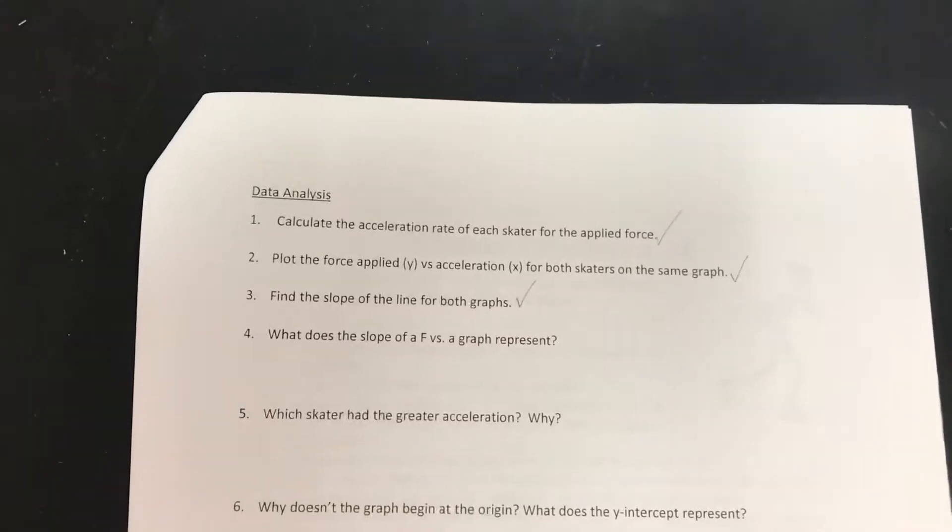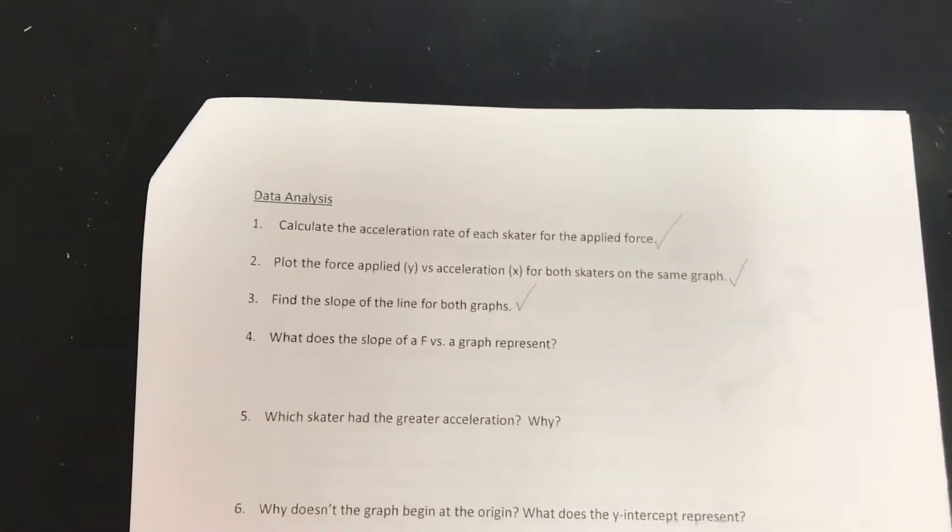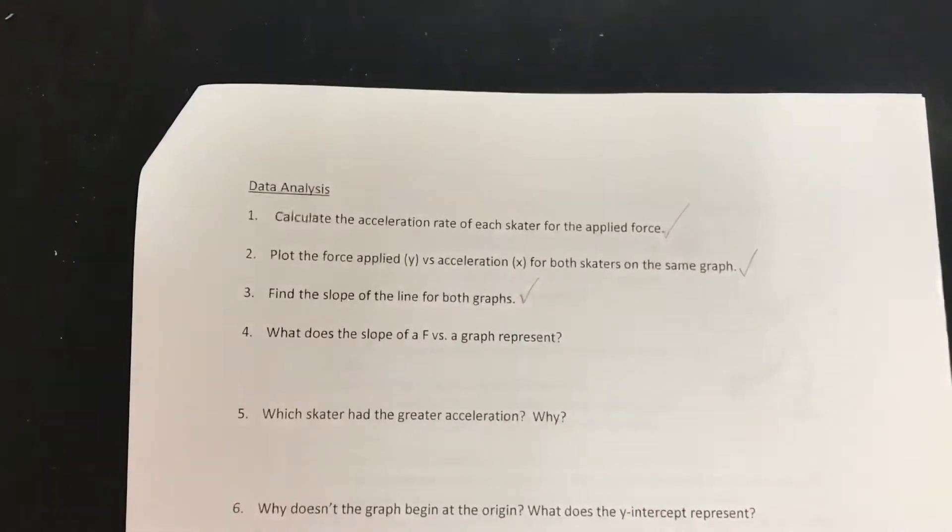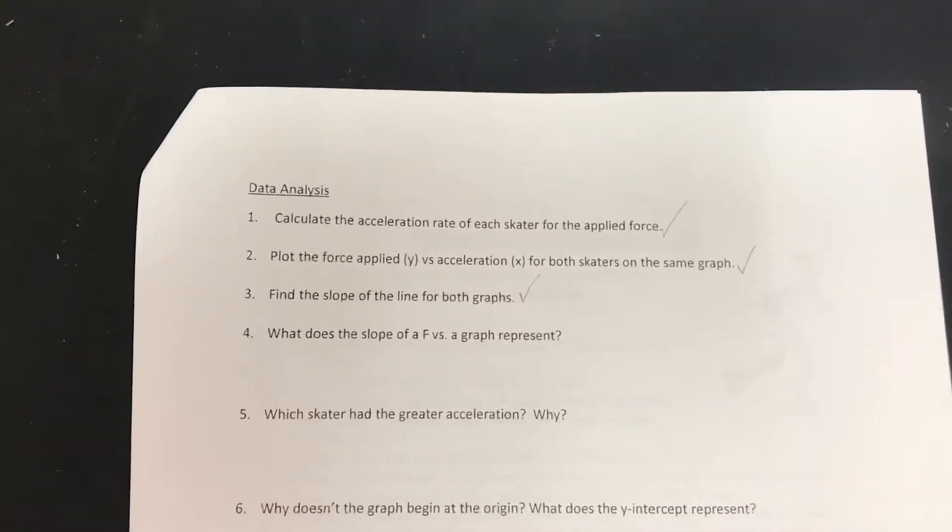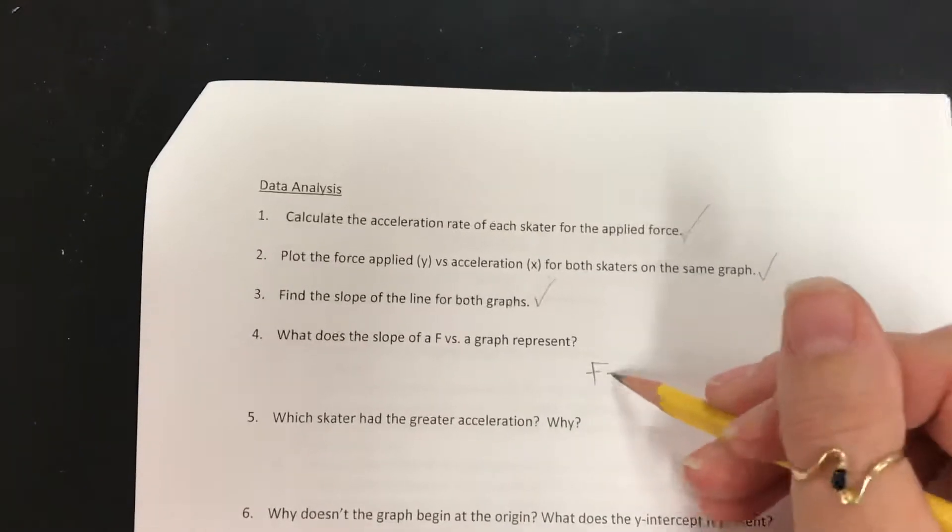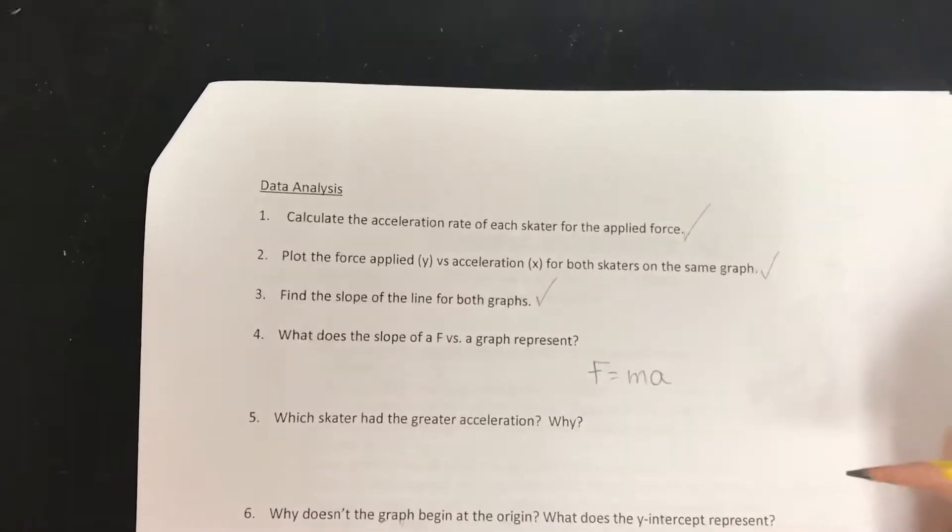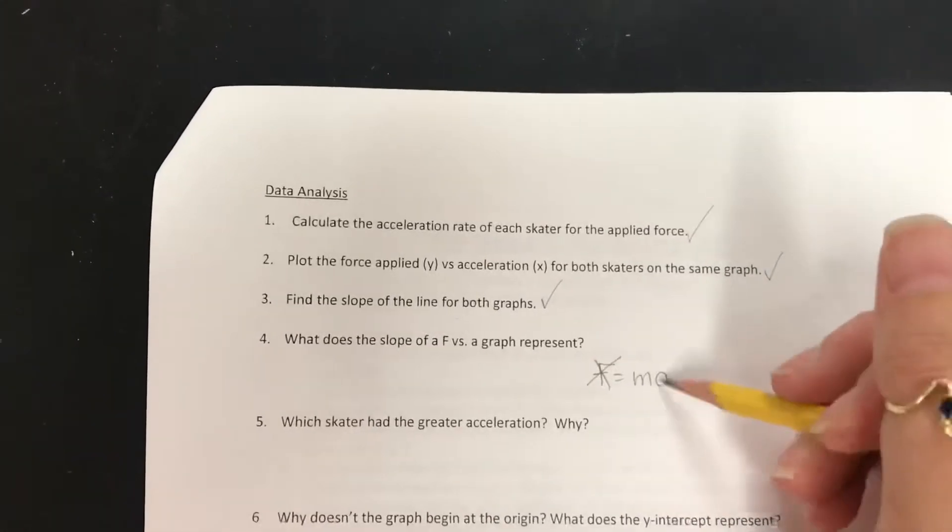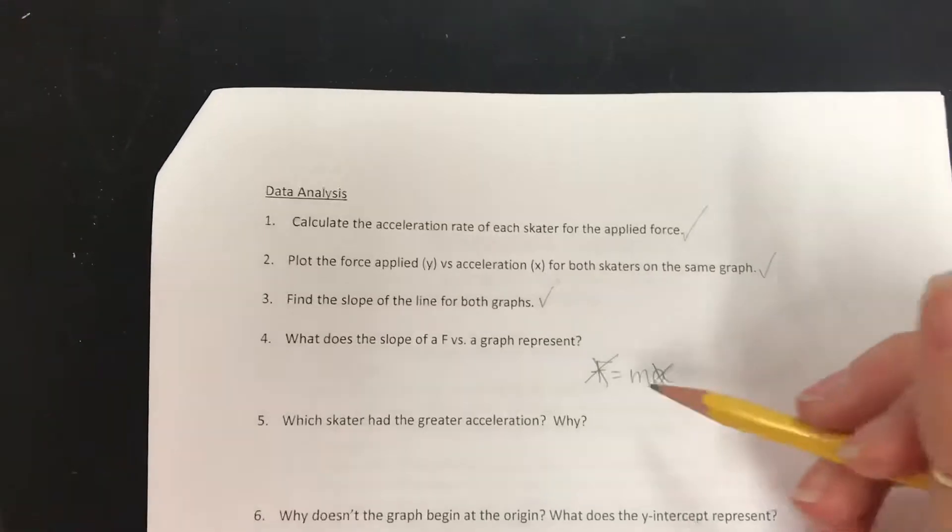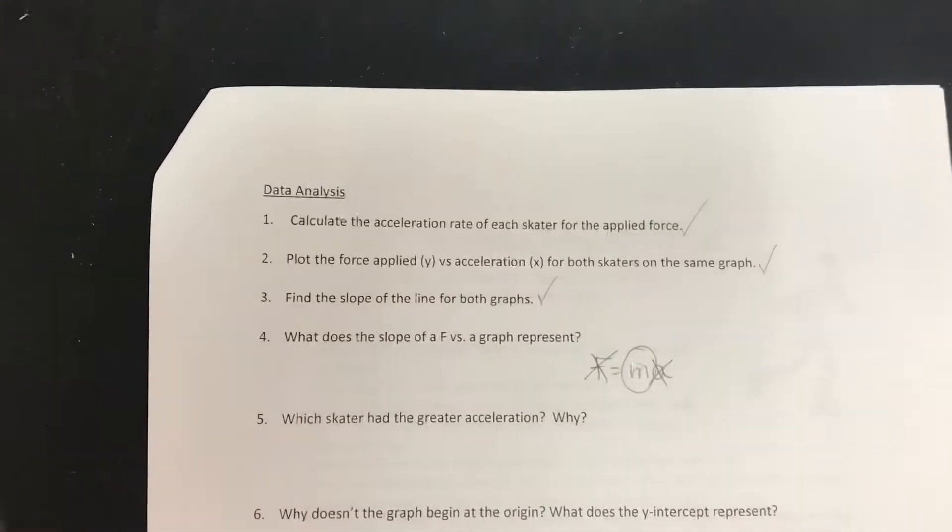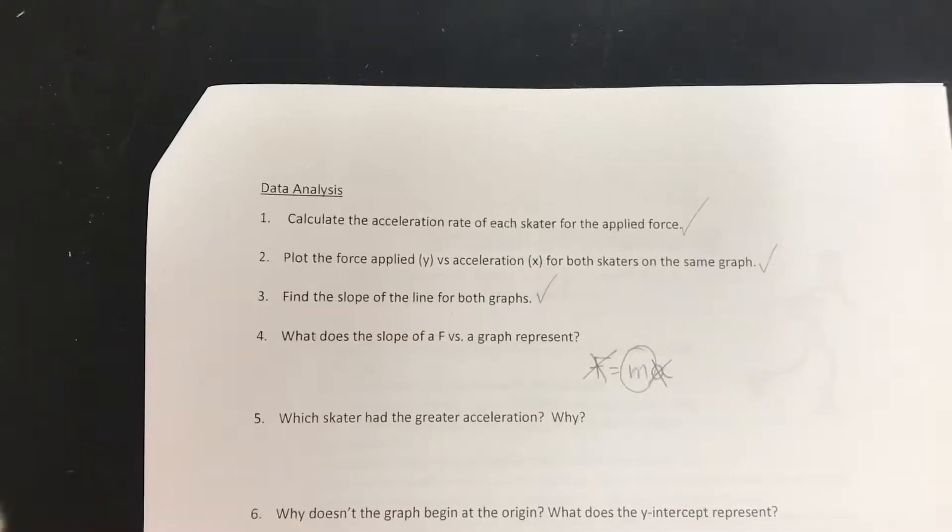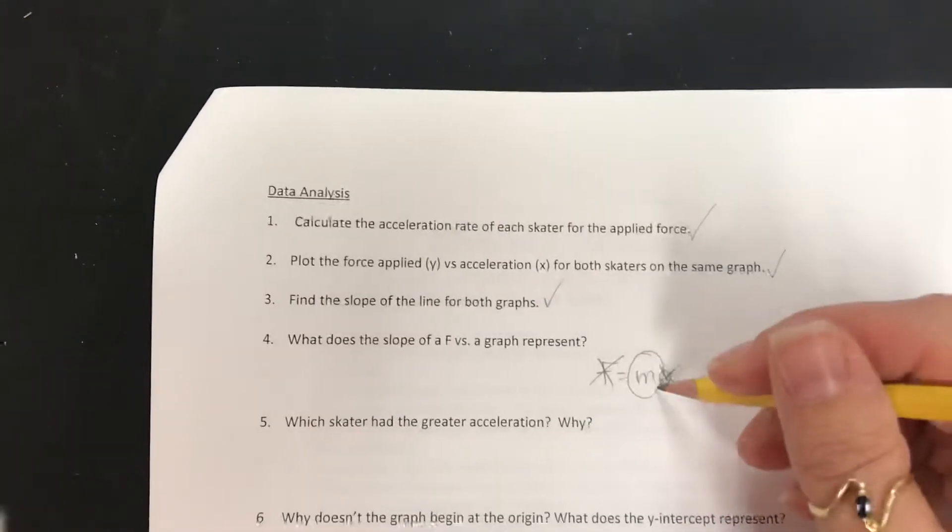Next thing I want you to do is find the slope of both lines. Now what does the slope represent? Take a second and think about it. We know what the slope represents because we have the equation f equals ma. We graphed force versus acceleration, so the slope represents mass. The whole point of this experiment is that we were going to find the mass.